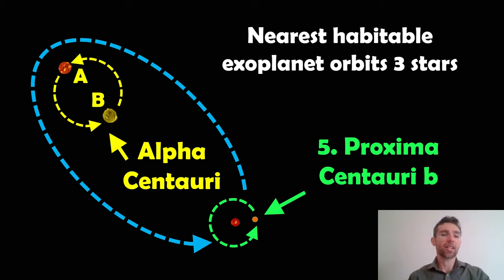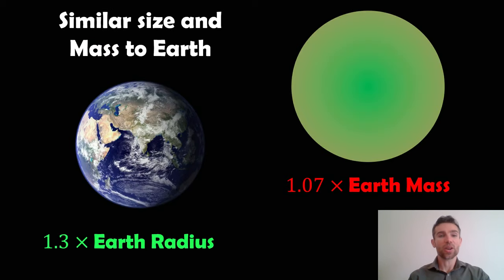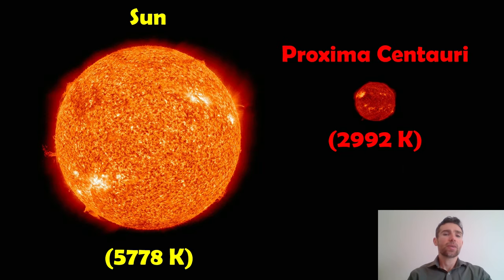Now my last exoplanet is actually our nearest exoplanet. And it's, again, it's a dynamically interesting one. This is Proxima Centauri b. Our nearest exoplanet, it's the size of Earth, it orbits three stars, and it's habitable. What more could you ask for? So similar size and mass to Earth. It's about one and a third times the radius of Earth, so it's a little bit bigger size-wise, and slightly more massive, but it's approximately quite similar to Earth. Again, this is our nearest exoplanet. The actual star that it orbits is a red dwarf, a very small star, very cool star. So it's just under, well, it's almost half the temperature as the Sun. So very cool, very small star, Proxima Centauri.